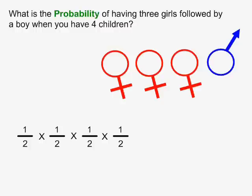When we multiply these four fractions together, we get 1 over 16, which converts to a decimal of 0.0625 or, in percentage form, is equal to 6.25%.